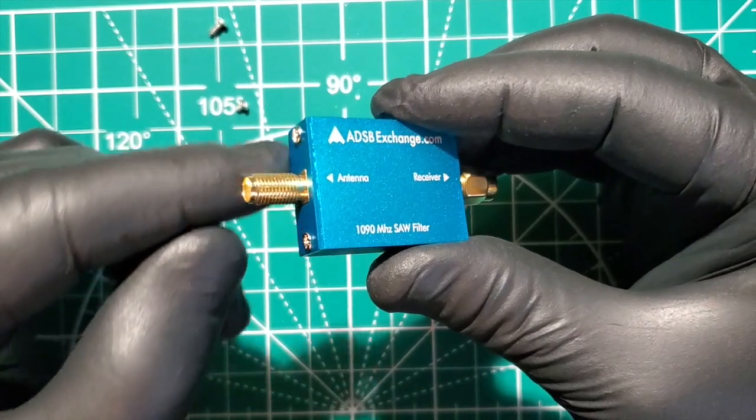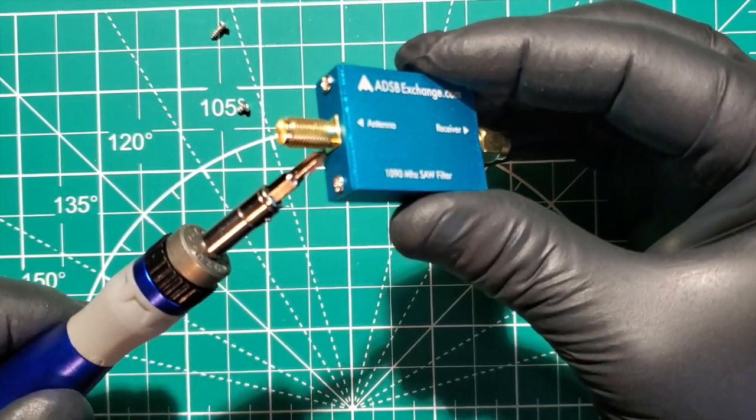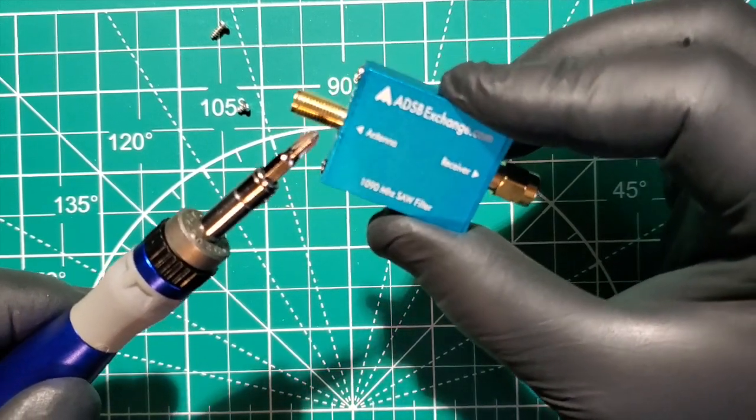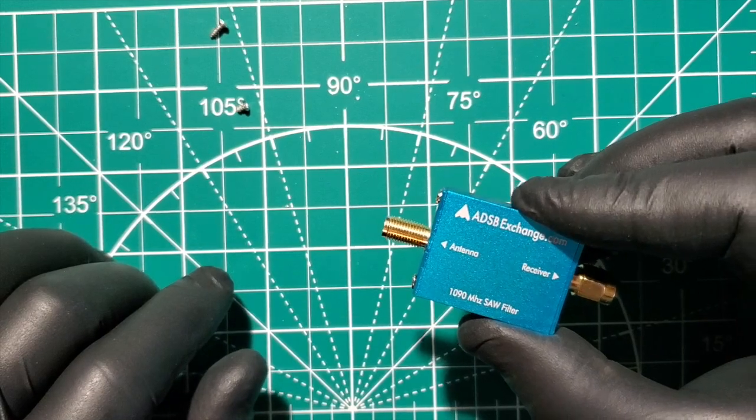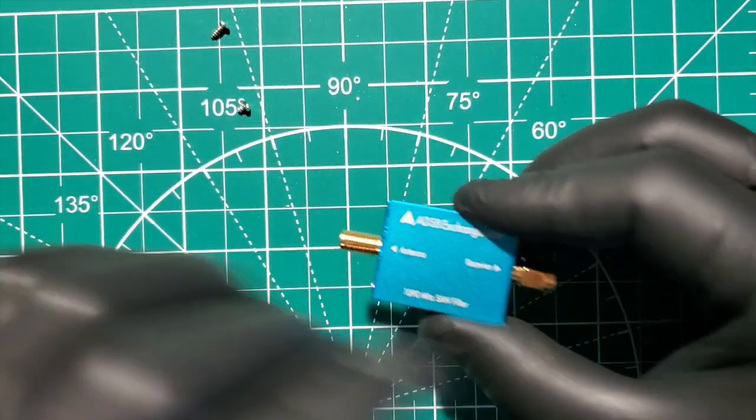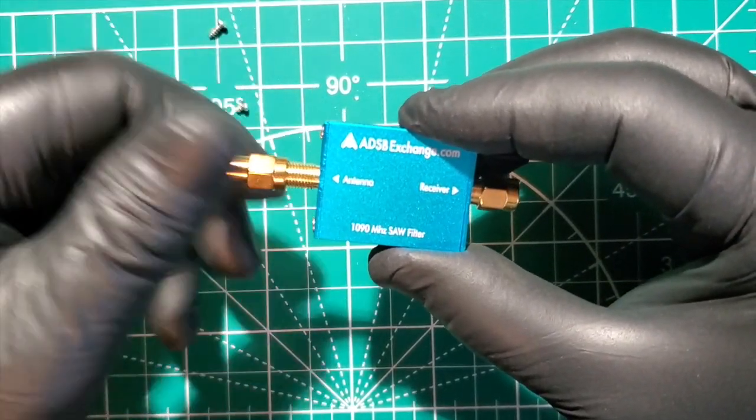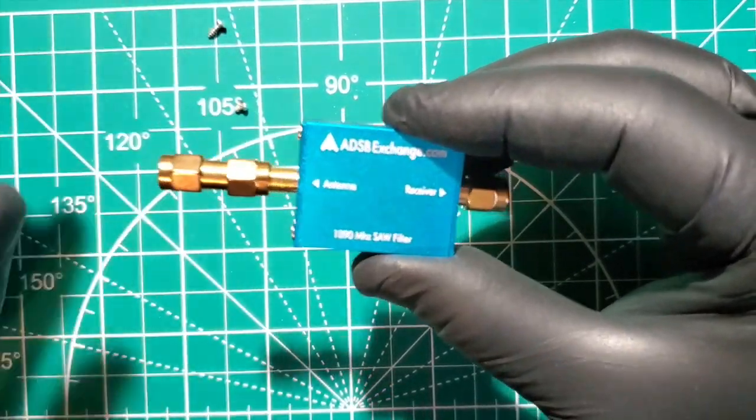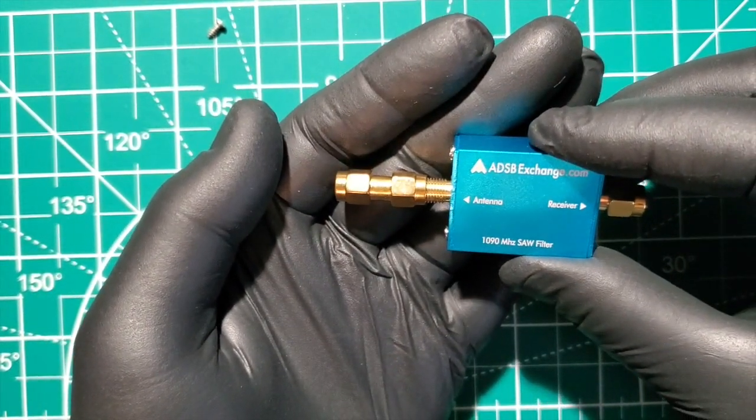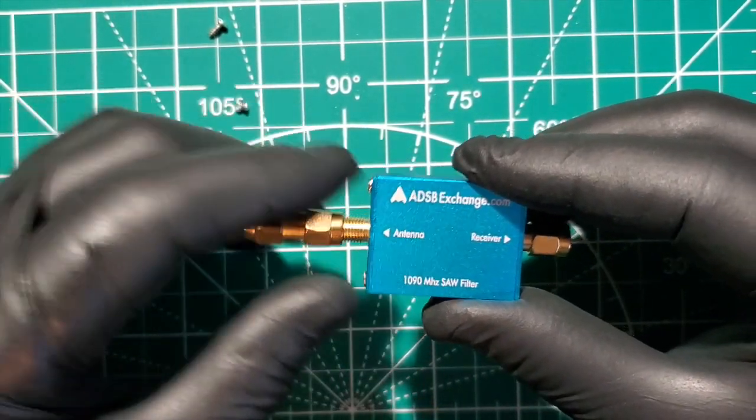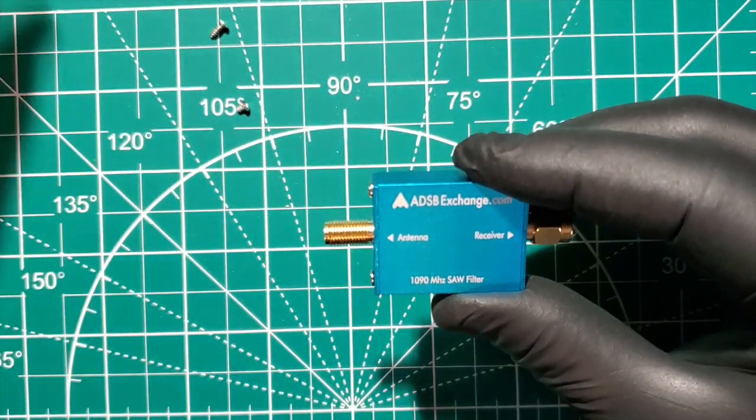Now it doesn't come with a nut, washer, or lock washer here on the SMA, but you can always add one because you do have plenty of threads here for your connector coming from your antenna. So if we screw this on, there's how much room you have. You definitely have enough to put a nut on there.